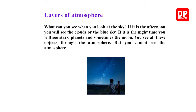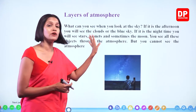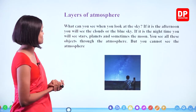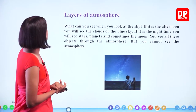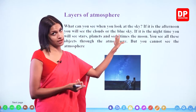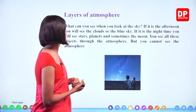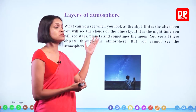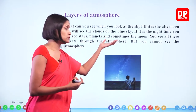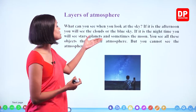Starting with the layers of the atmosphere: when you look at the sky during the afternoon, you see clouds or the blue sky. At night, you see stars, planets, sometimes the moon, air balloons, or airplanes. You see all these objects through the atmosphere, through its layers.